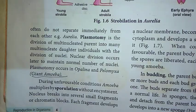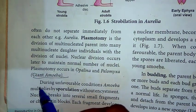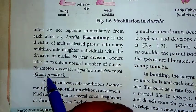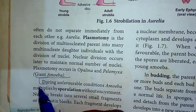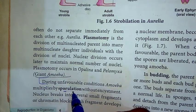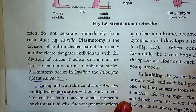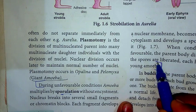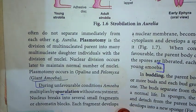For the fifth question — give short notes on sporulation — the answer starts in page number four, beginning with: 'during unfavorable conditions, amoeba multiplies by sporulation,' continuing through to 'the young amoeba.' That completes Part C.